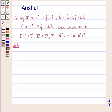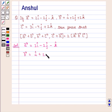Let us proceed with the solution. We are given vector A as 2i cap minus 2j cap minus k cap, vector B as i cap plus 2j cap plus 2k cap, vector C as 3i cap minus 4j cap plus 2k cap.